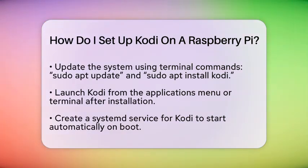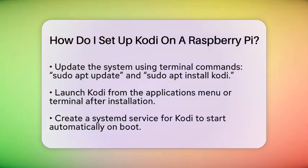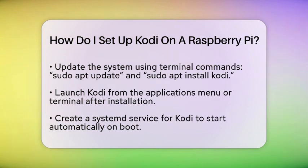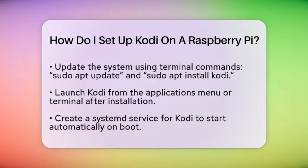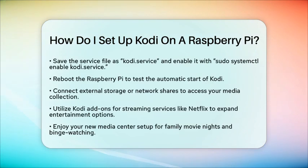To make Kodi start automatically when you turn on your Raspberry Pi, you can create a systemd service. Create a new file in the system directory named kodi.service. Add the necessary content to the file, which includes details about the service and how it should run. Save the file, enable the service with sudo systemctl enable kodi.service, and then reboot your Raspberry Pi to see if it works.